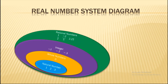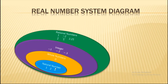Extending further, numbers like 1/2, −2/5, and 2.25 are called rational numbers. Looking at the diagram, integers, whole numbers, and natural numbers are all contained within the set of rational numbers. We can say all natural numbers are rational numbers, but not all rational numbers are natural numbers. For example, −1, −2, −3, and 0 are rational but not natural numbers.